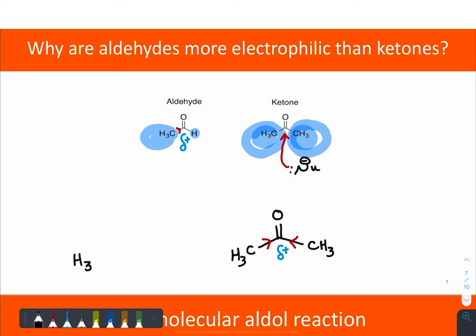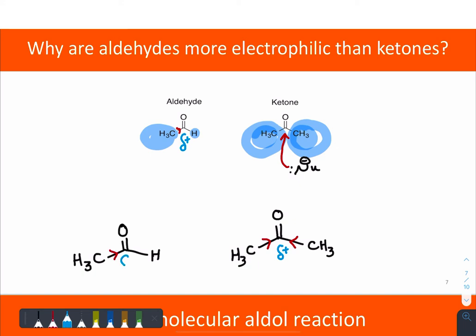That's in contrast with the aldehyde, where there's only the one side donating electron density. So not only is the delta plus bigger — the carbon more electrophilic in and of itself — but it's also less sterically hindered.